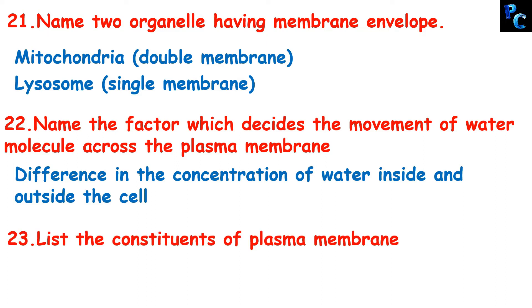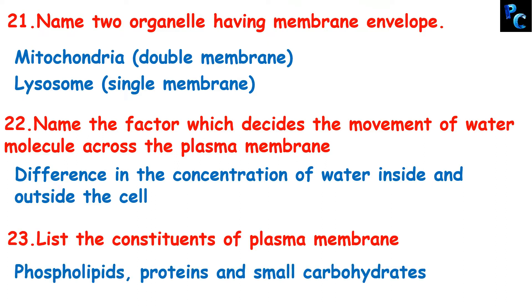List the constituents of plasma membranes. They are phospholipids, protein, and small carbohydrates.